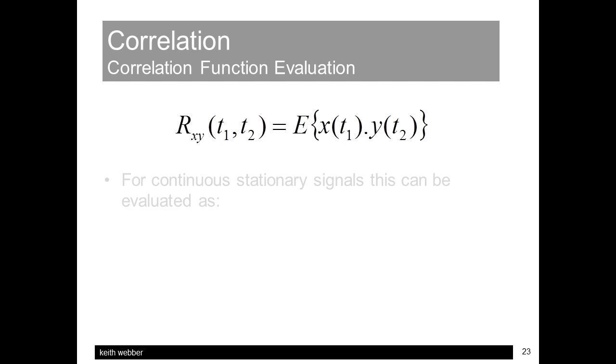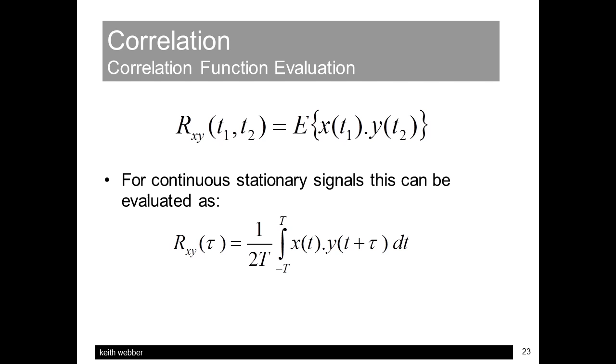With sample signals, finding the correlation function is a matter of the summation and averaging of multiplications. With continuous signals, however, this becomes an integration of the available time period, big T, of the data around zero, and the result, as before, is a function of the time lag Tor.